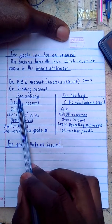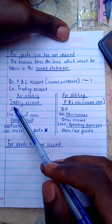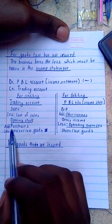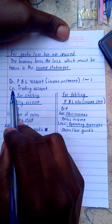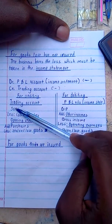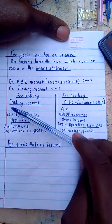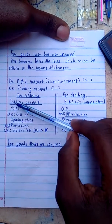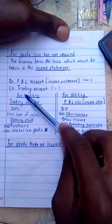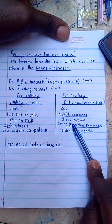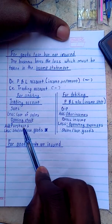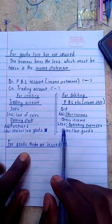When they say credit the trading account, it means: in the trading account — which runs from sales down to gross profit — after opening stock and purchases, you subtract the stolen or lost goods. Crediting the trading account means minus in the trading section. So debiting the income statement means you less it in operating expenses, and crediting the trading account means you less it in cost of sales, after adding purchases.